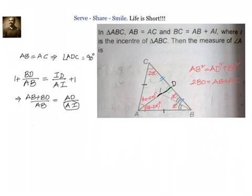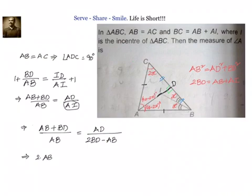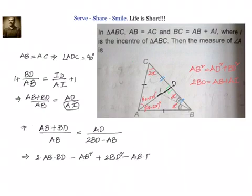Now let's solve this. We replace AI with 2BD minus AB from the second condition. So we have AB plus BD divided by AB equals AD divided by (2BD minus AB). Doing cross multiplication gives us 2·AB·BD minus AB squared plus 2BD squared minus AB·BD equals AB·AD.